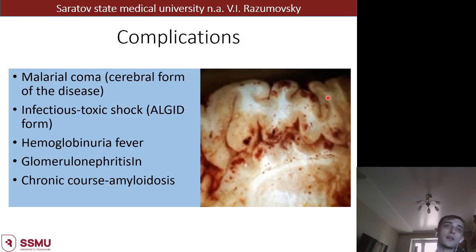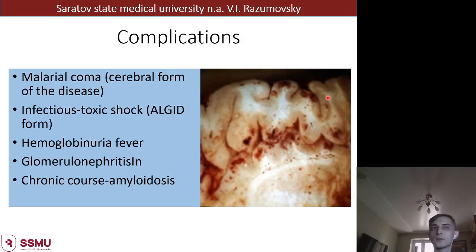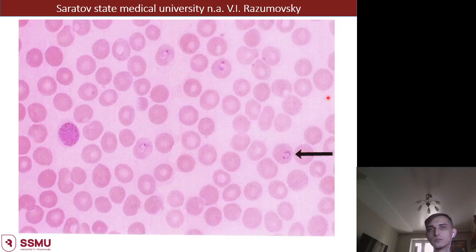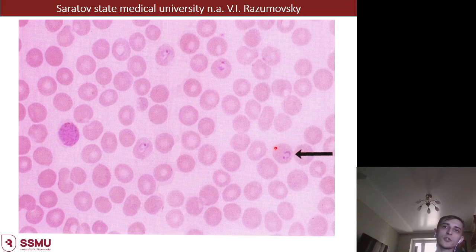Complications of malaria may include coma, intestinal toxic shock, hemoglobinuria fever, glomerulonephritis, and chronic course with amyloidosis. On blood examination we can see accumulation of Plasmodium inside erythrocytes.